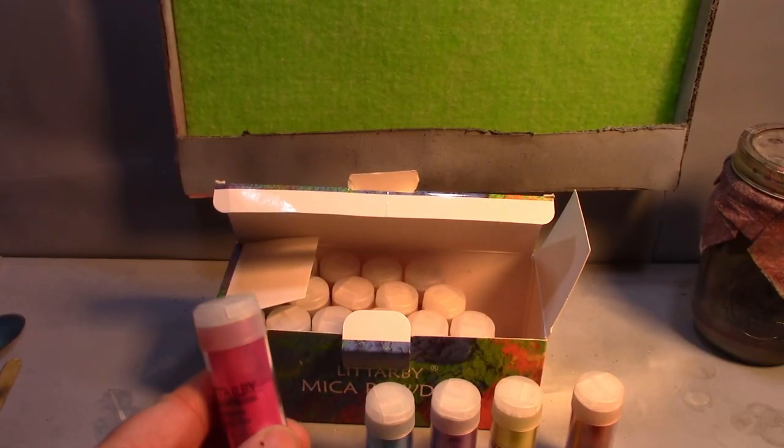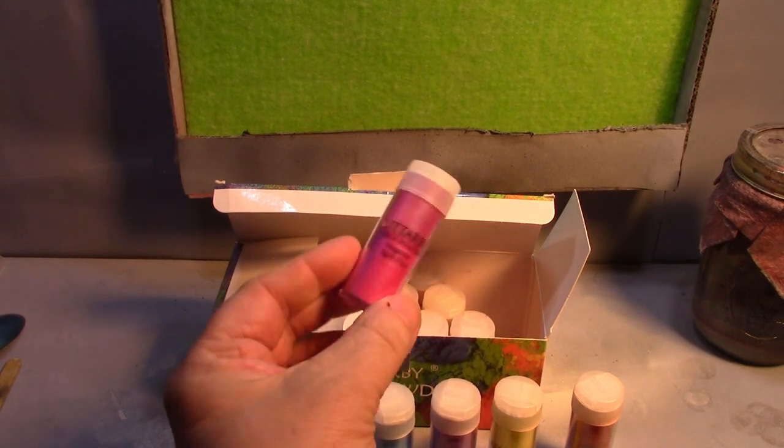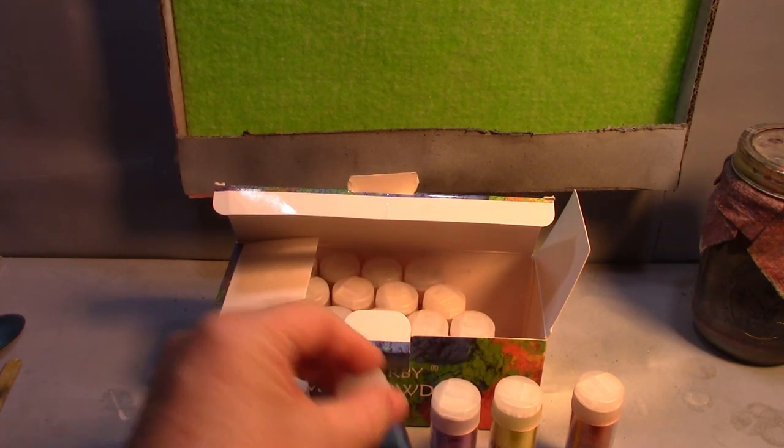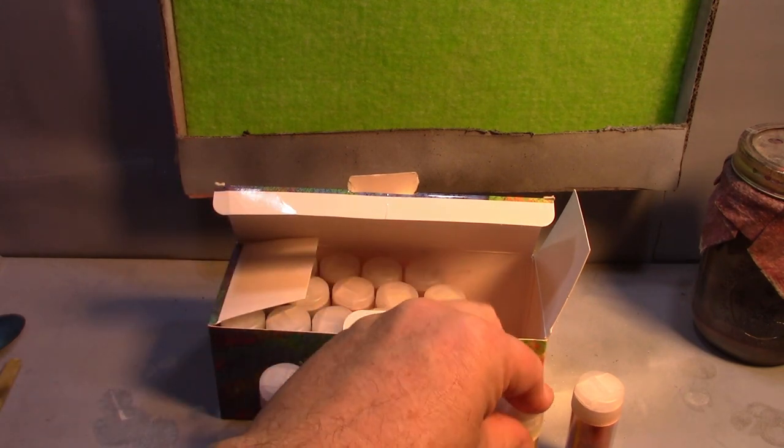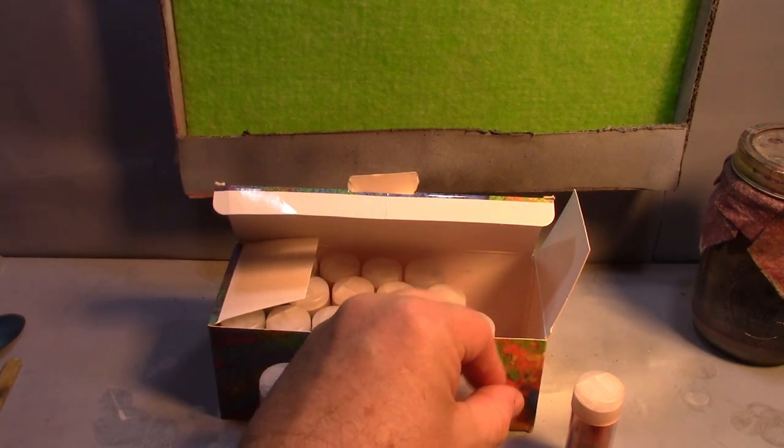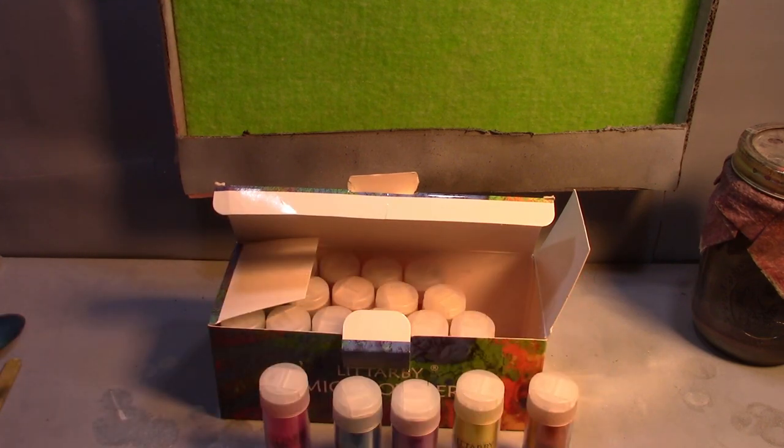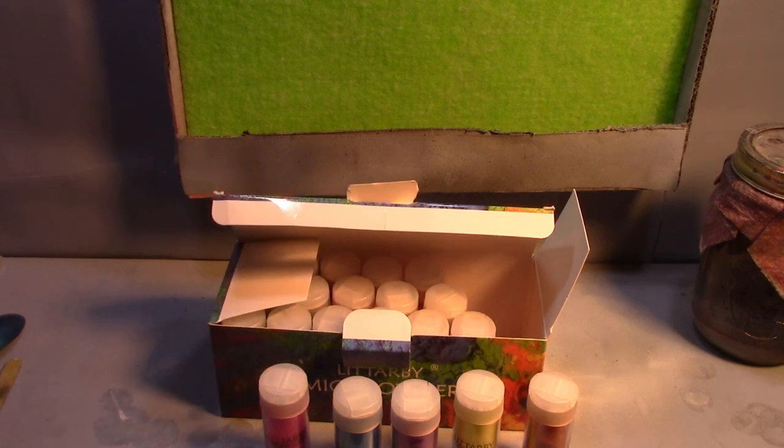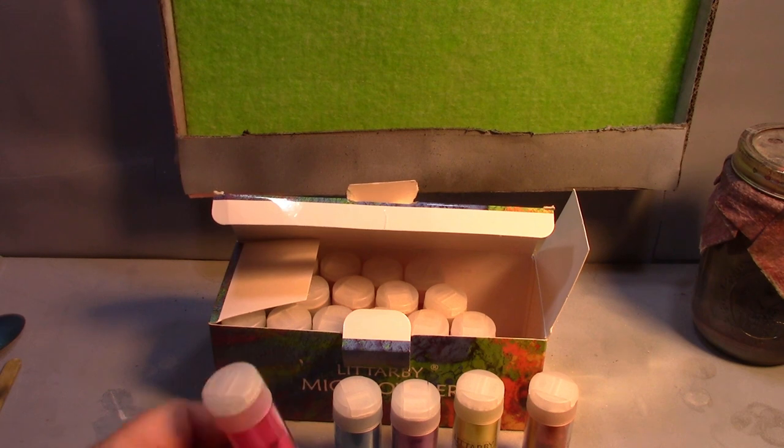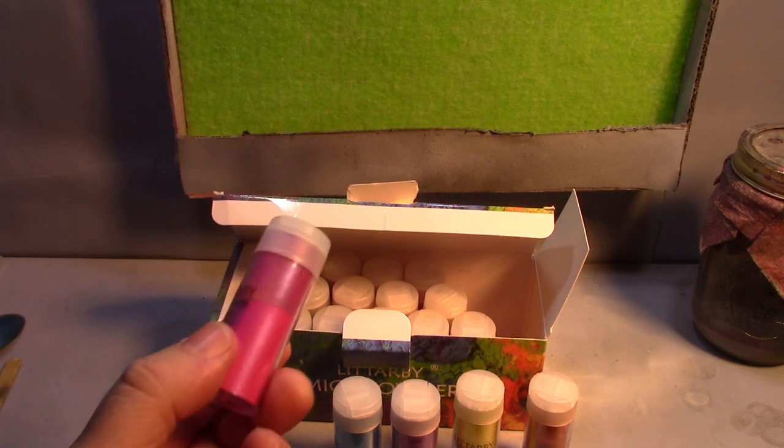Anyways, look at some of these colors. This is magenta, but man, that is bright. Blue, purple, lavender, lemon yellow, copper, just all kinds of stuff. 21 of these for $11.97. You just need a tiny speck each time you use it.